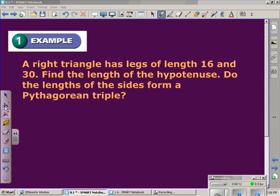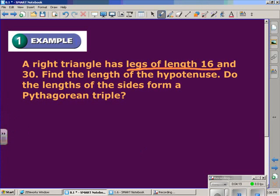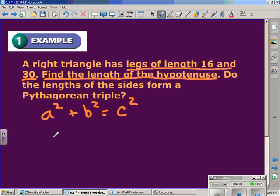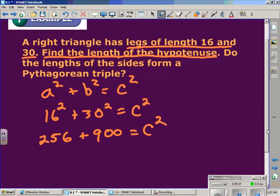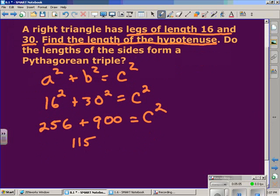Example one, a right triangle has legs of length 16 and 30. Find the length of the hypotenuse. Do the lengths of the sides form a Pythagorean Triple? We have two things that we need to do here. First, we need to find the hypotenuse of the given right triangle with the given information. So we'll write down the Pythagorean Theorem. a squared plus b squared is equal to c squared. And since we are trying to solve for the hypotenuse, we will be solving for c. So we write it as 16 squared plus 30 squared is equal to c squared. We evaluate 16 squared and 30 squared. 16 squared is 256. 30 squared is 900. We set that equal to c squared. The sum on the left hand side will give us 1,156. And that is equal to c squared.